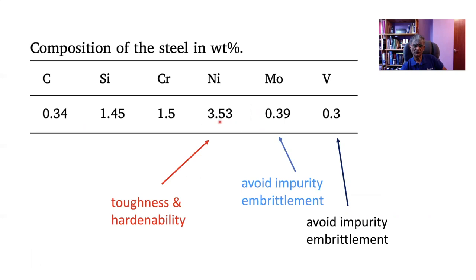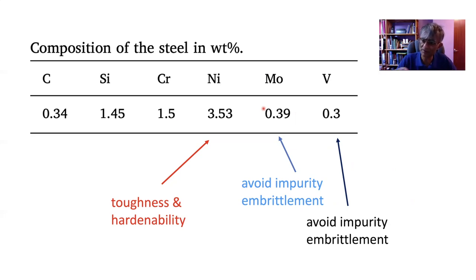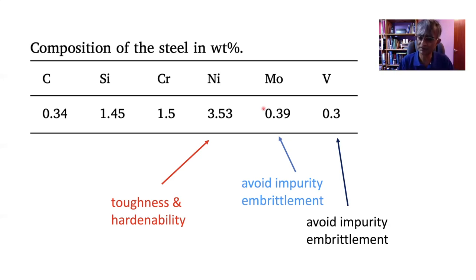We have some nickel to enhance the toughness and hardenability. Hardenability is also enhanced by chromium because we don't want any other phases to form when we are hot rolling — the hot rolling should end up with a martensitic microstructure, no further heat treatment. Molybdenum is added because high strength steels are very sensitive to impurities segregating to the austenite grain boundaries. Molybdenum tends to stop that embrittlement by associating with the phosphorus atoms, preventing them from reaching the austenite grain surface and causing failure along grain boundaries.